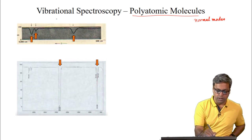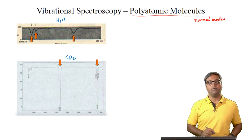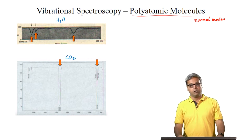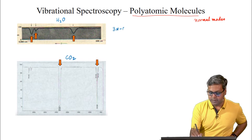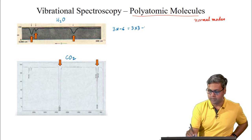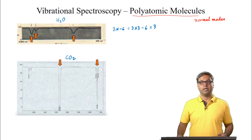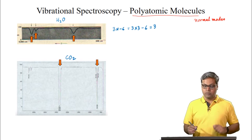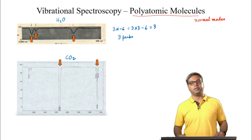This is the IR spectrum of water. Water has 3n-6, that is 3×3-6 = 3 vibrations, because water is nonlinear, and also 3 peaks are observed in the IR spectrum.